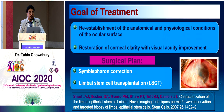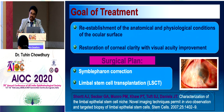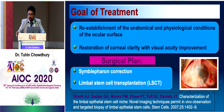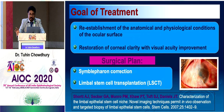When managing such cases, we must achieve certain goals. The ideal time for SLET is after three months, when inflammation has subsided and the eye surface is wet — SLET cannot be done on a dry surface. The primary goal is reestablishment of anatomical and physiological conditions of the ocular surface; the second goal is restoration of corneal clarity with visual acuity improvement. Surgical plans include symblepharon correction along with limbal stem cell transplantation. If symblepharon is more than 15 mm of the lid margin, a two-stage procedure is needed — first release symblepharon, wait two to three weeks, then proceed with limbal stem cell transplantation.